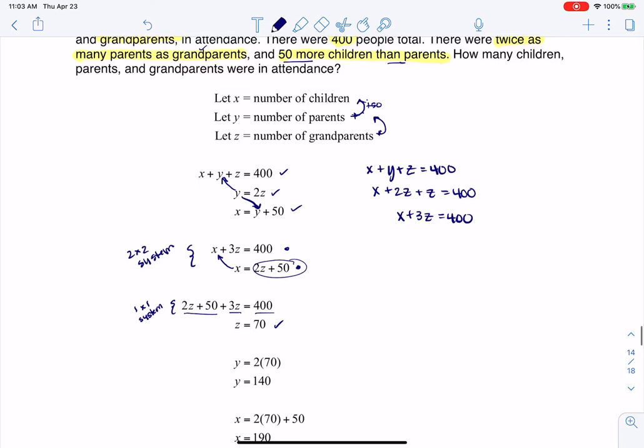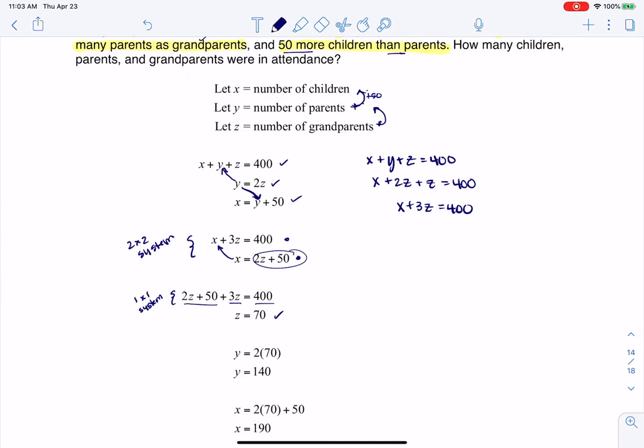Then it's a matter of back substituting. I take the number of grandparents, I double it, and there's the number of parents.